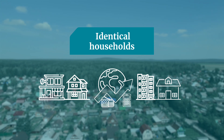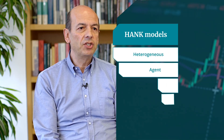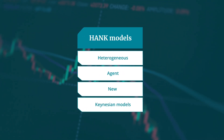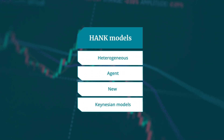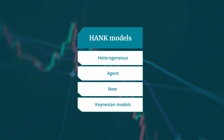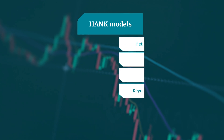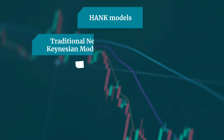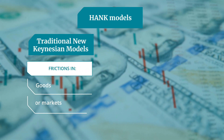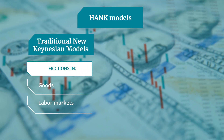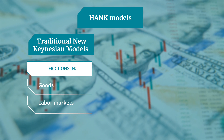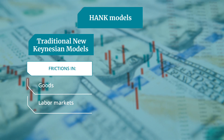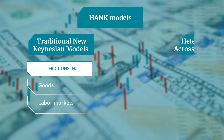This has given rise to a new class of models, so-called HANK models, which stands for Heterogeneous Agent New Keynesian models. These combine elements of traditional New Keynesian models — namely frictions in goods and labour markets — with elements that incorporate heterogeneity across households.